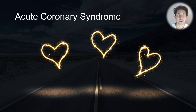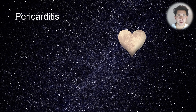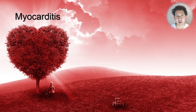In terms of cardiac, the main one is acute coronary syndrome, i.e. myocardial infarction and unstable angina. We also have pericarditis, which is inflammation of the pericardium, and myocarditis, which is inflammation of the heart muscle.